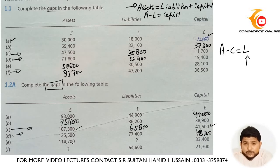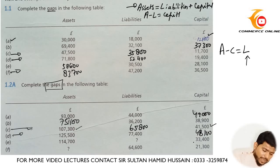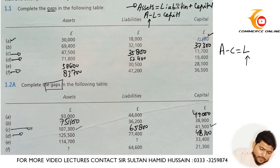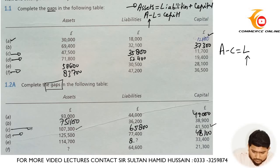In part E, assets are 114,700 and capital is 33,400. You need to find out liabilities. Applying the formula — assets minus capital equals liabilities — 114,700 minus 33,400 gives us 81,300.